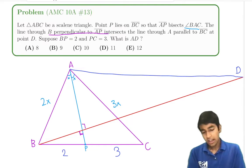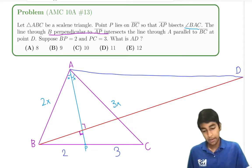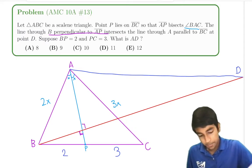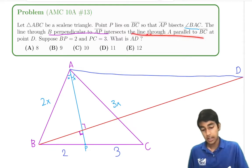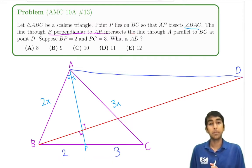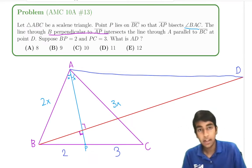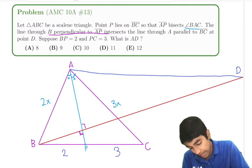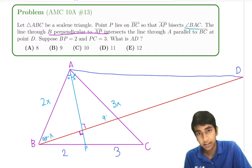And let's do a little bit of angle chasing here, because when we do angle chasing, we can discover some similar triangles. And because we have that AD, the line parallel, the line through A parallel to BC, is parallel to BC, we know there's going to be some similar triangles here. So we say that these two angles are X, so this will be 90 minus X, and this angle will be 90 minus X as well.